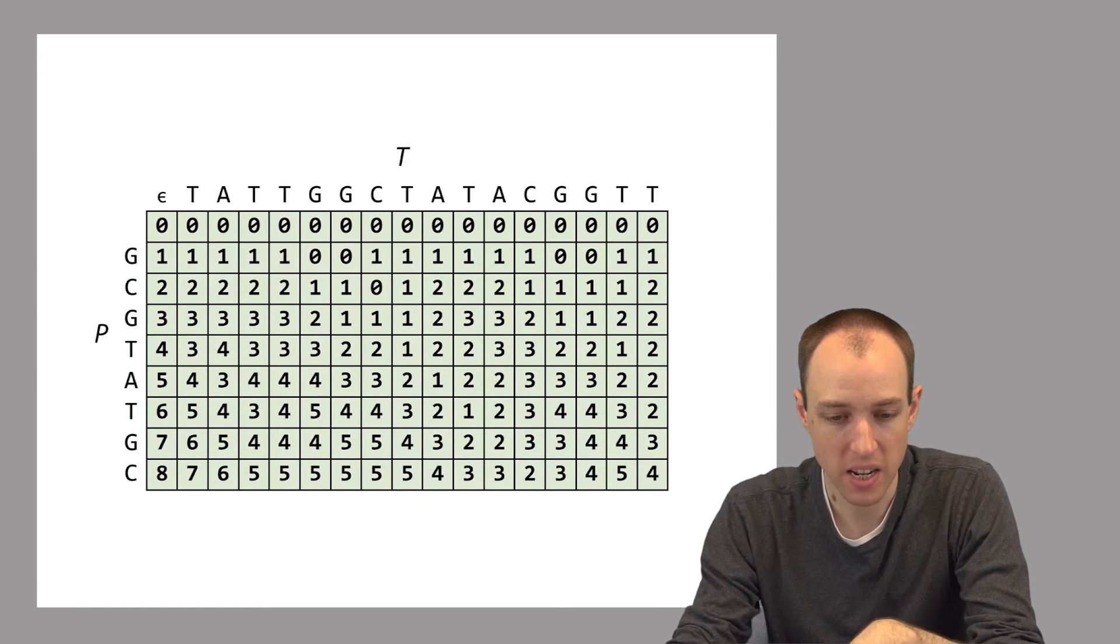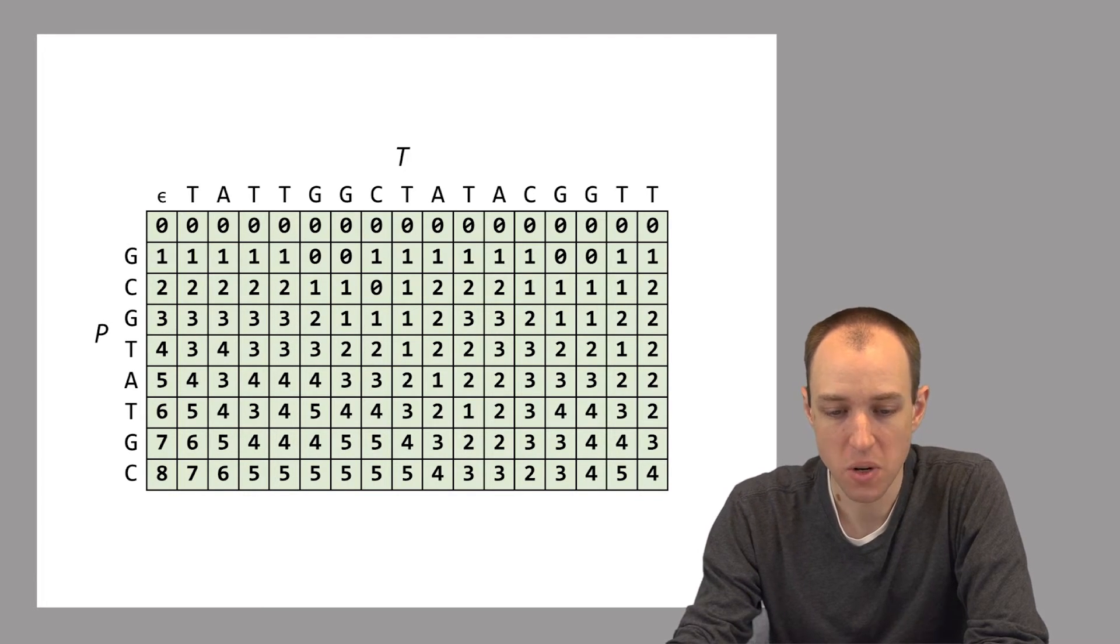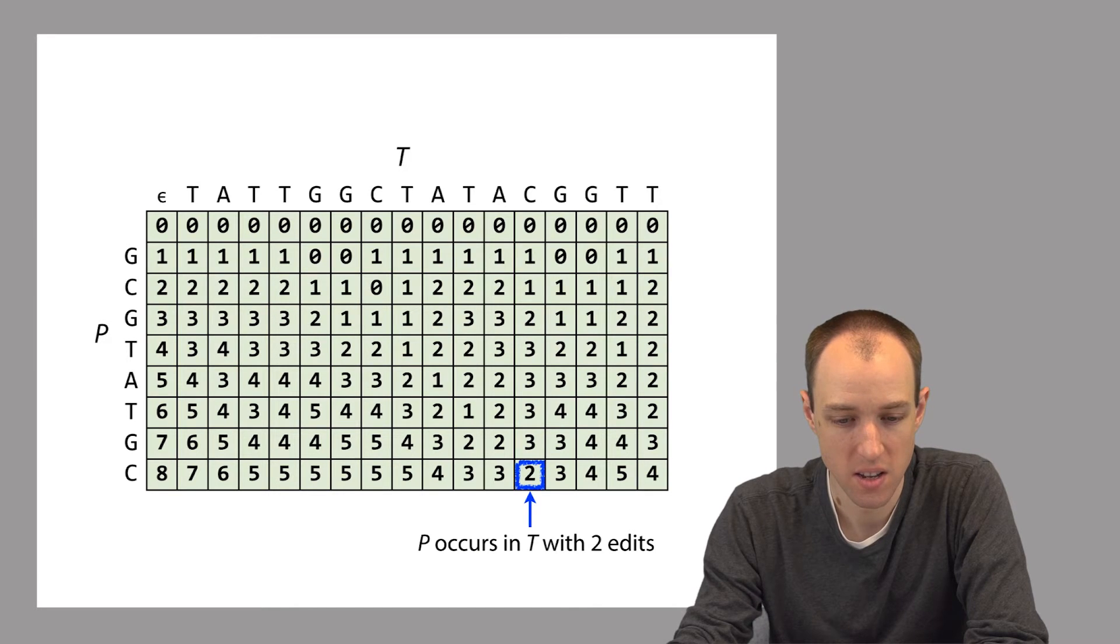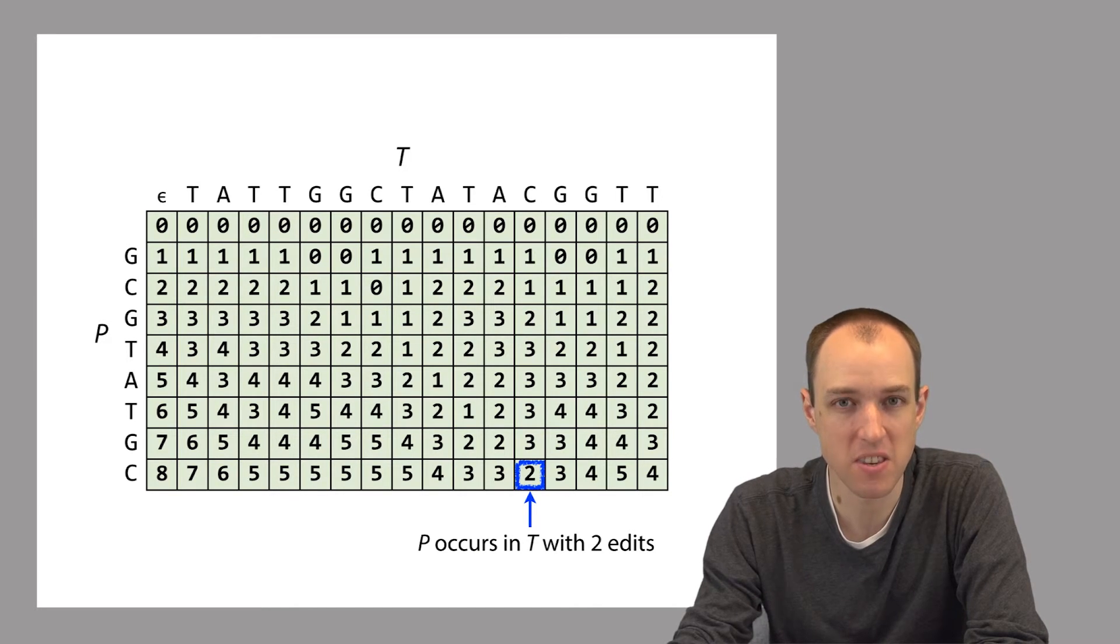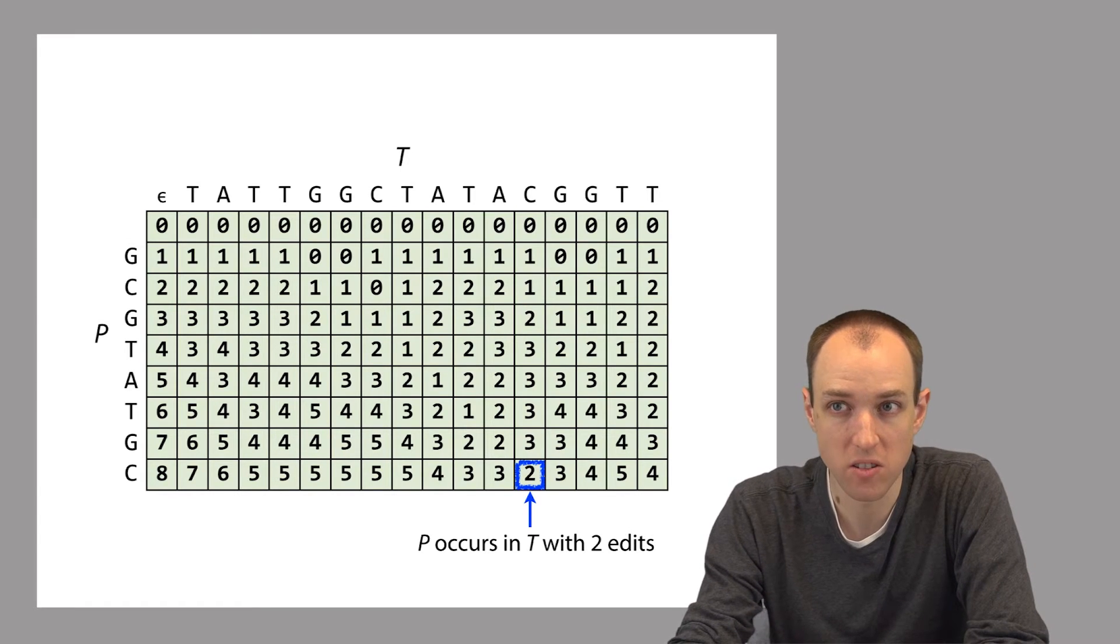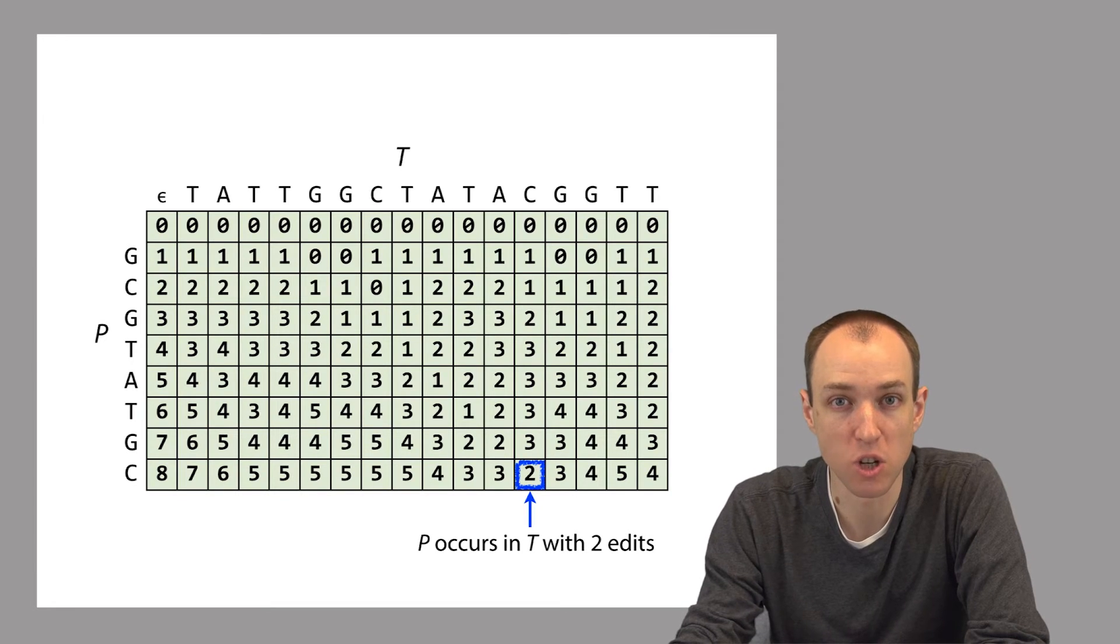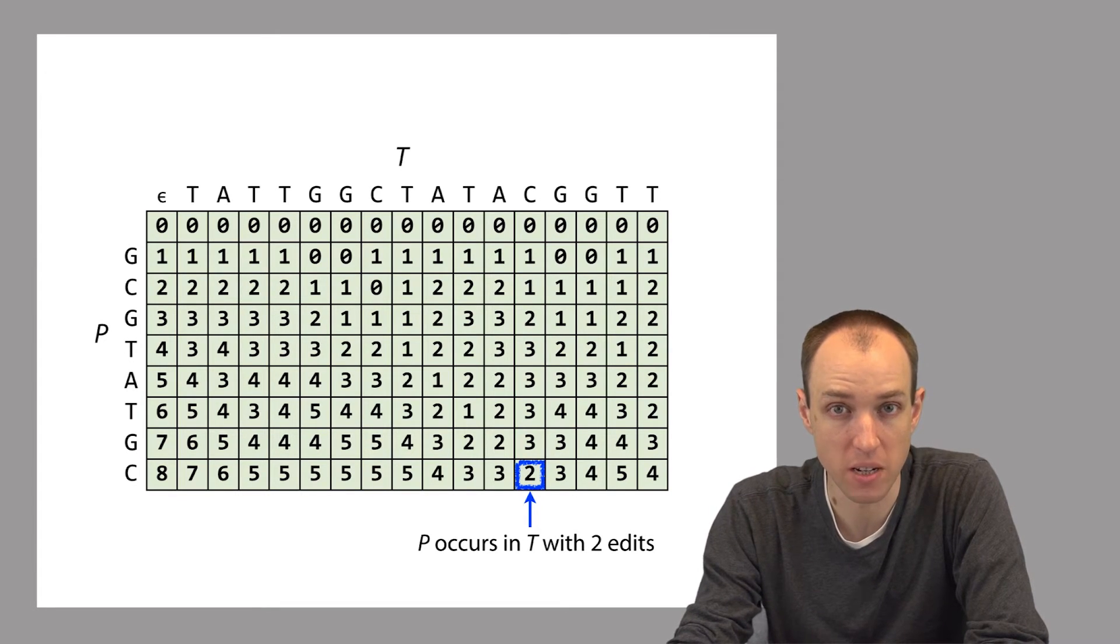In this case by looking at the matrix we can learn that there must be a two edit occurrence of P within T, that is the occurrence with the fewest edits. We know this by looking in the final row of this matrix where we find a 2. That tells us that there must be some substring of T that matches our pattern P with two edits. 2 is the minimal value in the final row so this corresponds to the closest match between P and some substring of T.